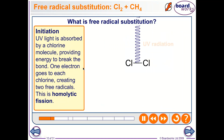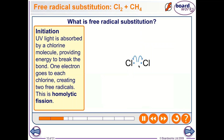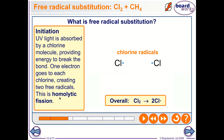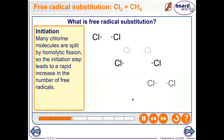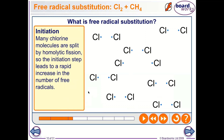The first step is initiation. The bond between the two chlorine atoms undergoes homolytic fission — the key word here is homolytic fission. The bond breaks right in the middle, and each chlorine atom retains its own electron, forming chlorine free radicals. This produces lots of chlorine free radicals.